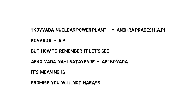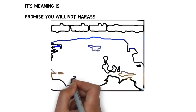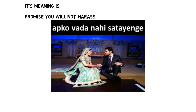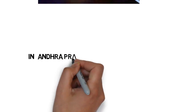The meaning of this sentence is 'I promise I will not harass you.' So friends, if you remember this sentence, you can easily remember these two keywords — AP and Kovada. You can also see an image here: a boy is promising a girl that he will not harass her. 'Aapko vada nahi satayenge' — AP for Andhra Pradesh, Kovada for Kovada nuclear power plant.